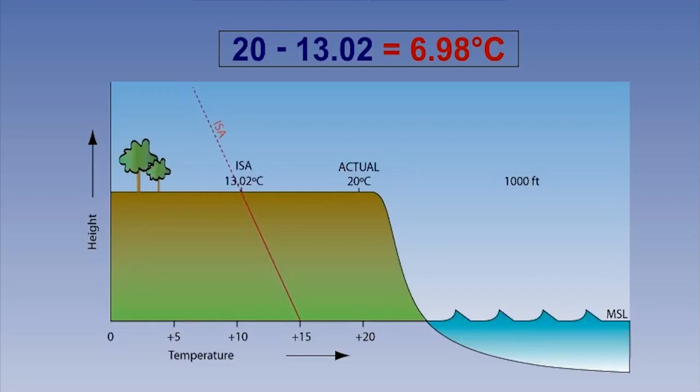The representation of this information is important. The best way to understand it is by reading the ISA deviation backwards. We can say that the real atmosphere is 6.98 degrees Celsius hotter than ISA.